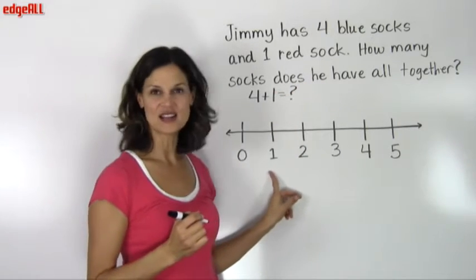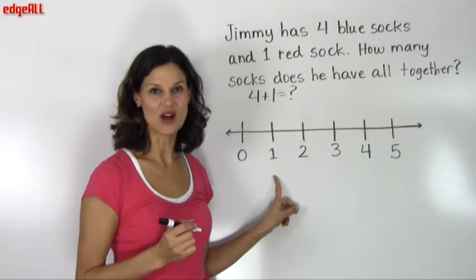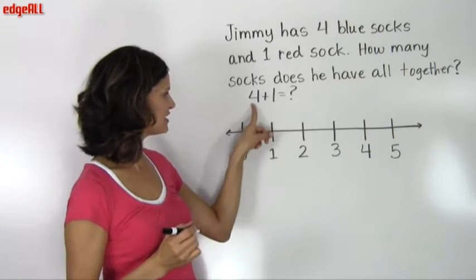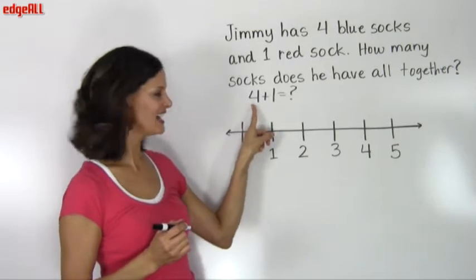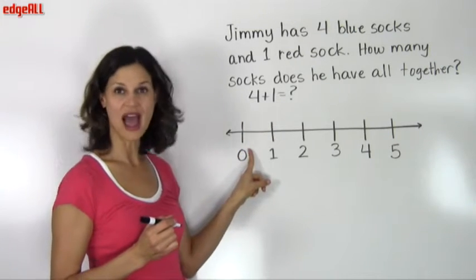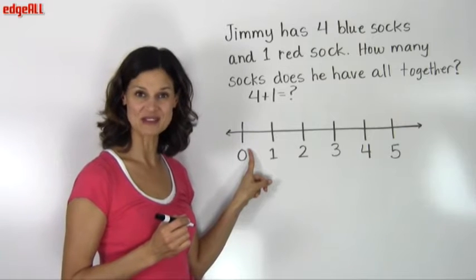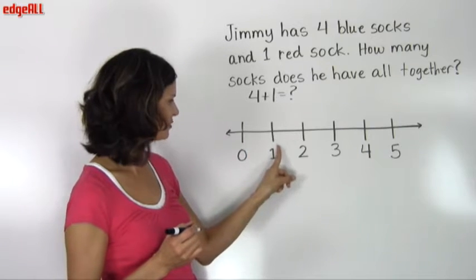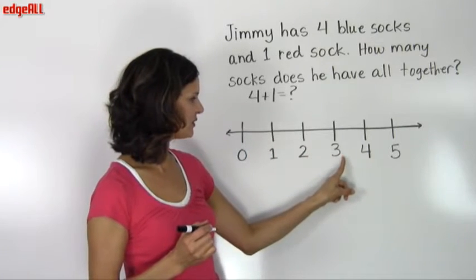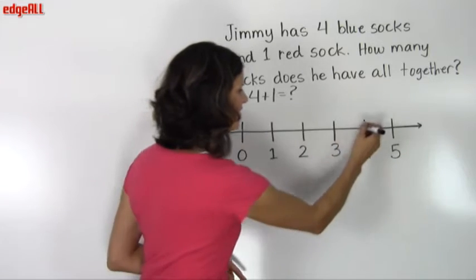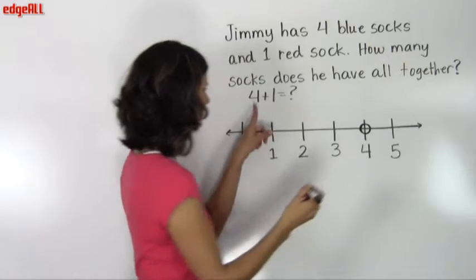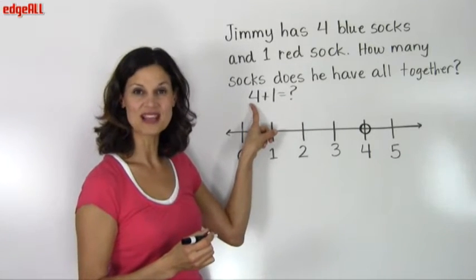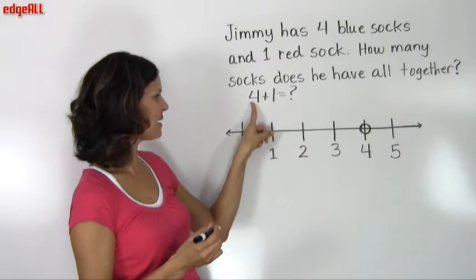We can start using the number line to solve our problem by first of all finding 4 on the number line. So starting at 0, I would find 4 by counting 4 spaces over to the right: 1, 2, 3, 4. And I found the 4. And I'm going to make a mark here on the number line for this 4 because this is where I'm going to begin my problem.